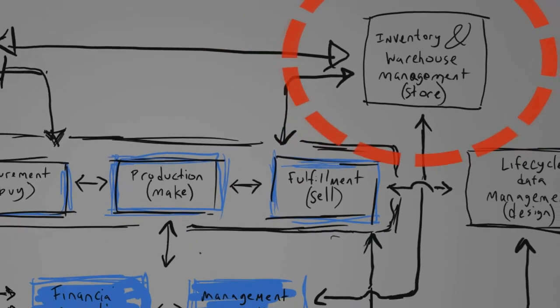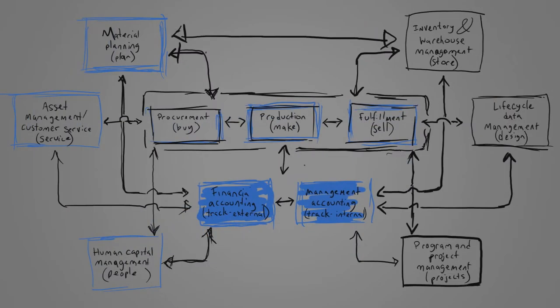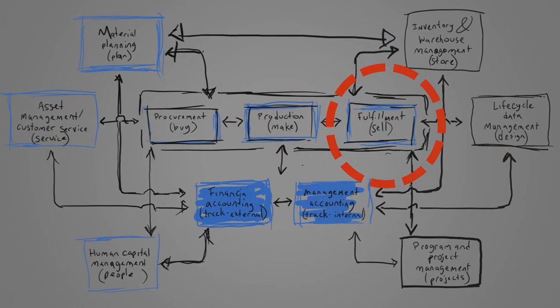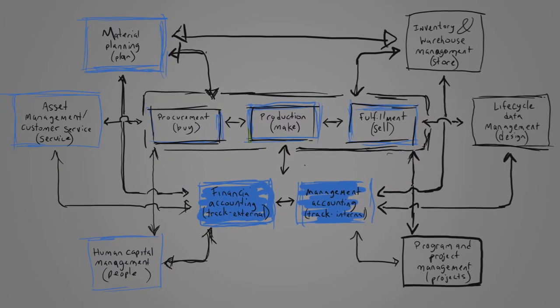...make the mousetraps, to inventory management which stores the raw materials and ships the finished goods. There's also fulfillment, a client-facing department which generates quotes, handles sales orders, verifies inventory, invoices the client, and collects their money. And all...